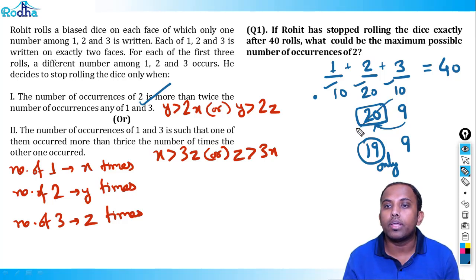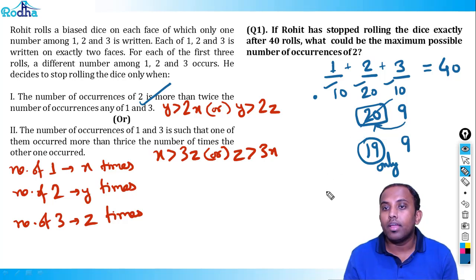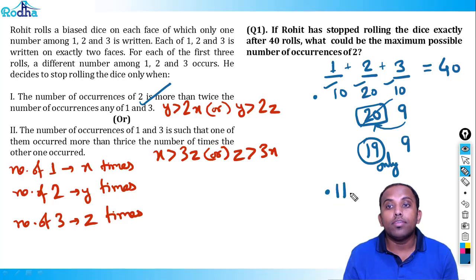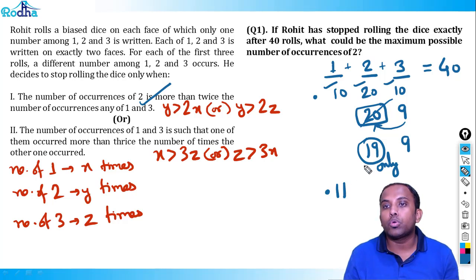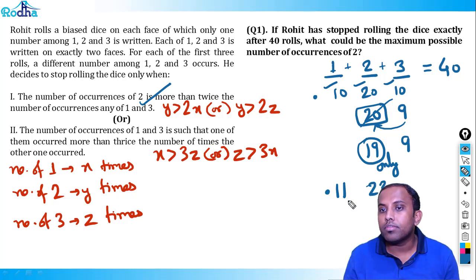So y = 19 is achievable. We need to also check that the second condition (x > 3z or z > 3x) is NOT triggered before this point. With x = 12 and z = 9, neither 12 > 27 nor 9 > 36, so the second condition is never triggered early. The maximum possible number of occurrences of 2 is 19.